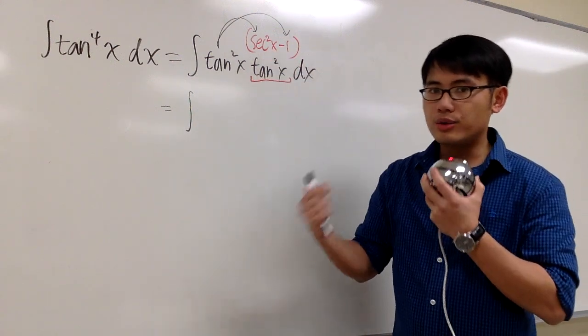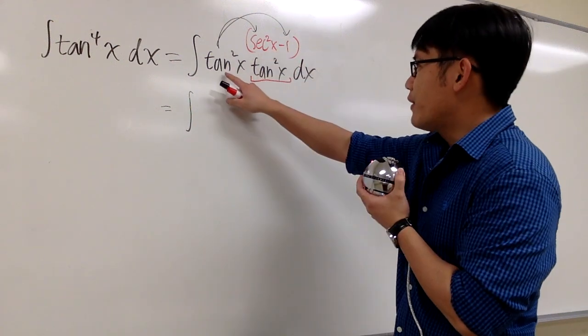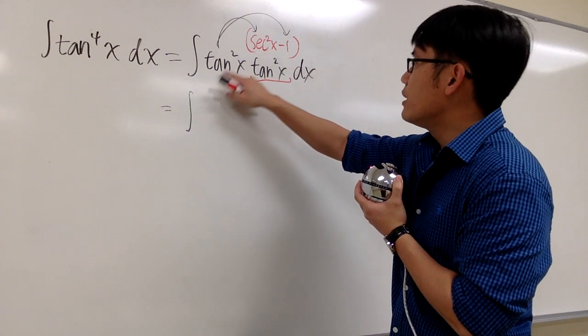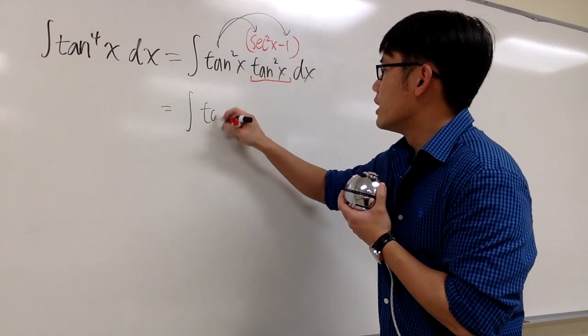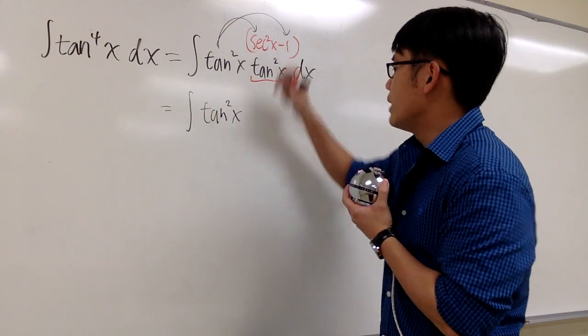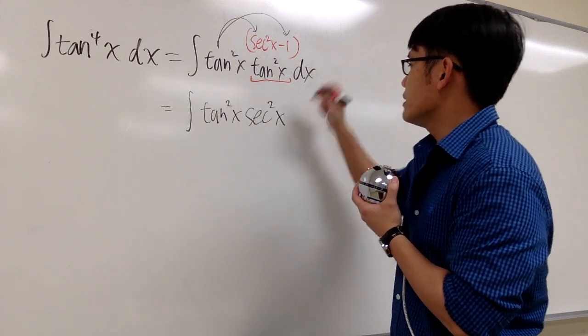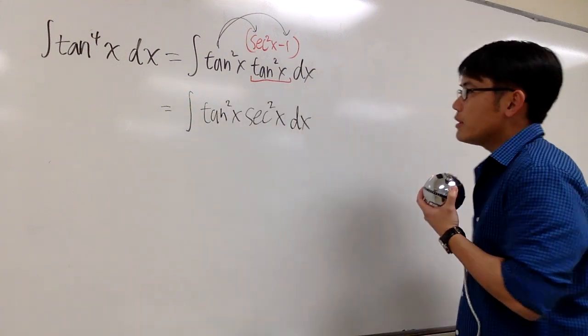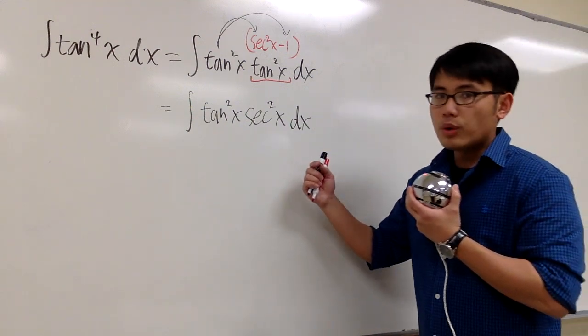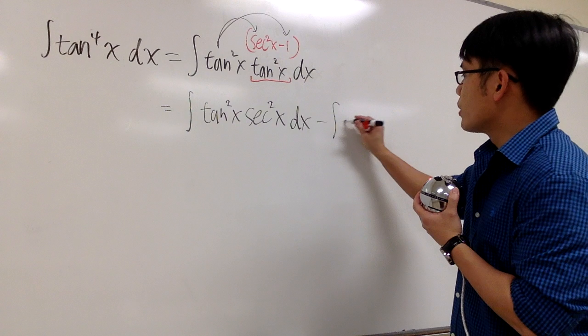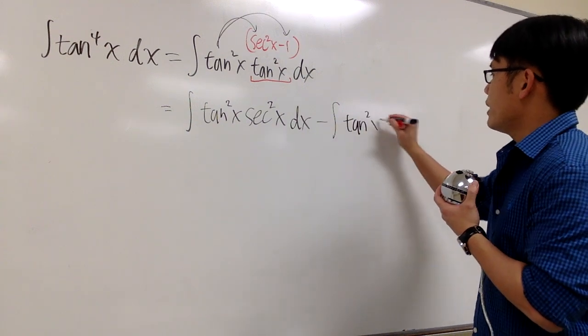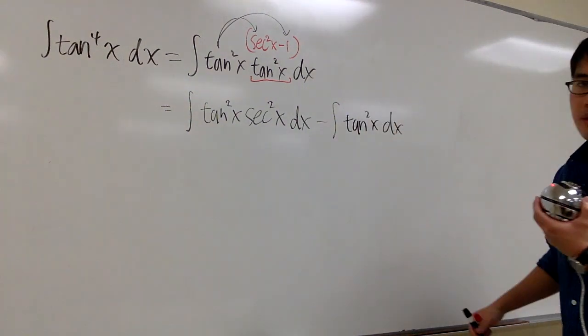In other words, I can break it apart into two integrals. The first integral will be tangent square times secant square x. So let me just put this down. Now, this is tangent square, and then we have the secant square x, and let's close that. Put dx right here. And the second integral will be tangent square x times negative 1. So that will be minus integral tangent square x, and let's put dx right here.